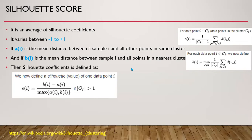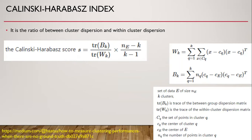The Calinski-Harabasz index is the ratio of between-cluster dispersion to within-cluster dispersion. If this is the matrix of within-cluster dispersion and this is the matrix of between-cluster dispersion, these are the traces of those matrices. This ratio is known as the Calinski-Harabasz score.